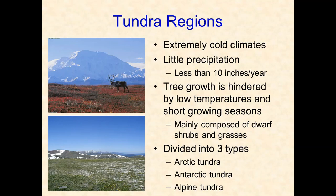Tundra biomes are cold and dry, generally experiencing less than 10 inches of precipitation per year. Because it's cold and dry, there are no trees — just grasses, some shrubs, and some flowering plants. It's simply too cold and too dry for trees to grow.